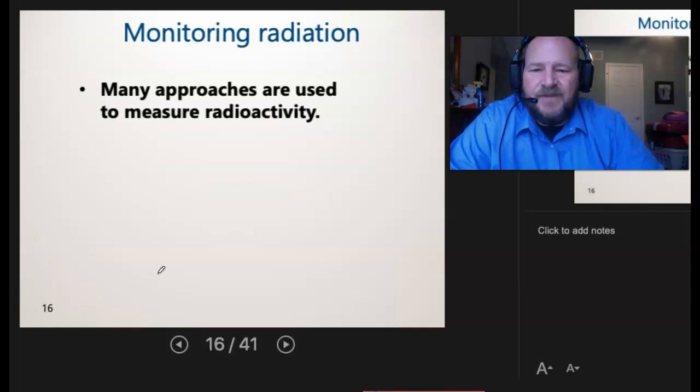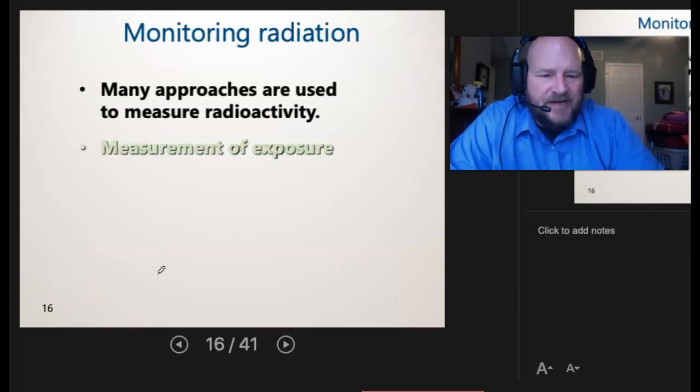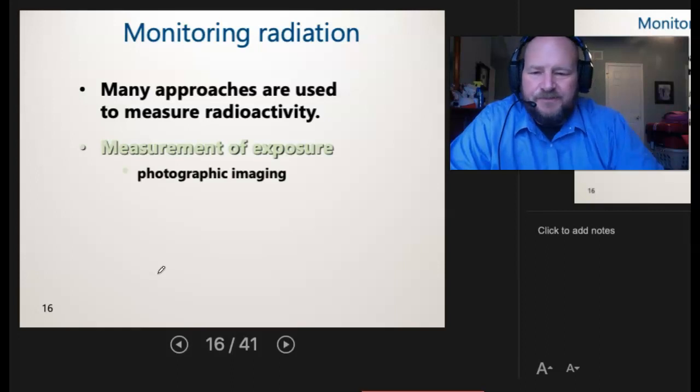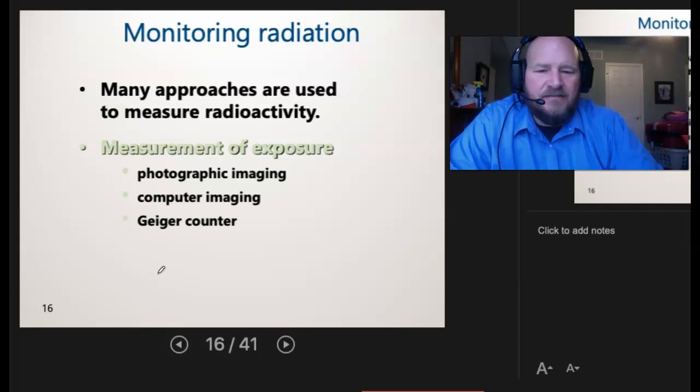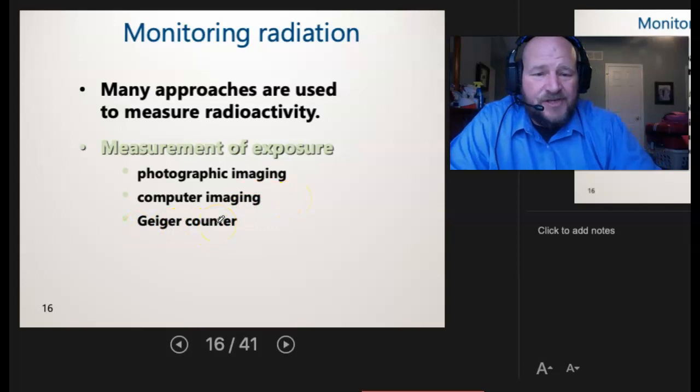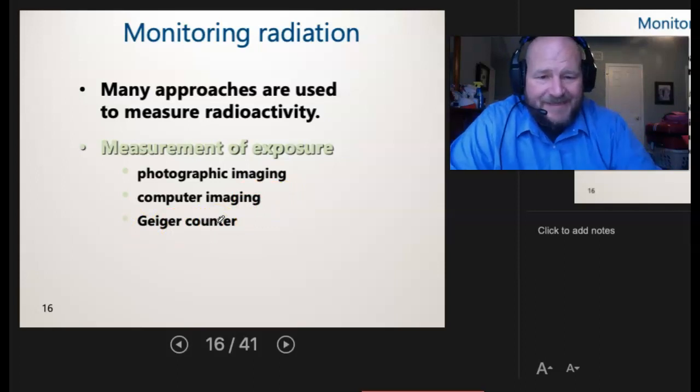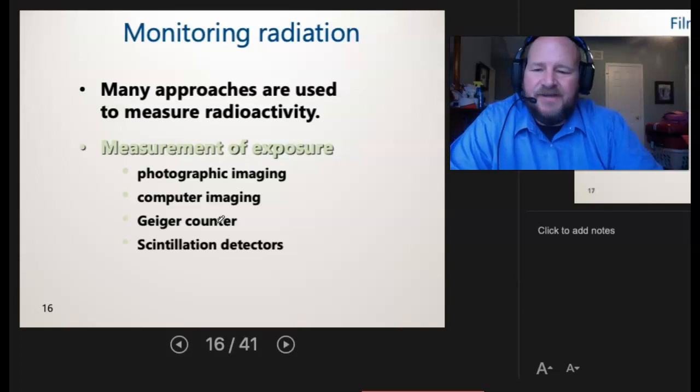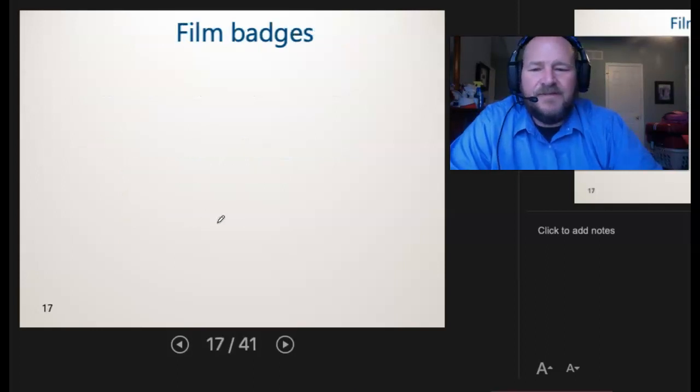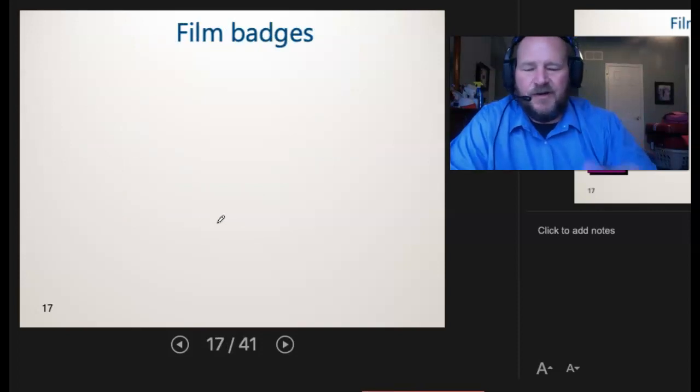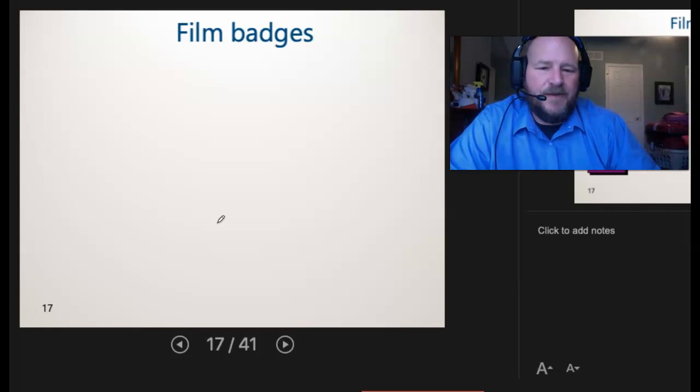Monitoring radiation, then. There's many approaches to monitoring radiation. First, we look at the measurement of exposure. Photographic imaging, computer imaging, maybe a Geiger counter. Photographic imaging might be something like an ID badge. Computer imaging, something like a scanner. Geiger counter is like the little clicker machine when you watch the movies with, like, ET. Scintillation detectors, very similar to a Geiger counter. What are you going to be most familiar with? For most of us that are taking this course, we want to go on to be in the medical professions, we're going to be looking at film badges.